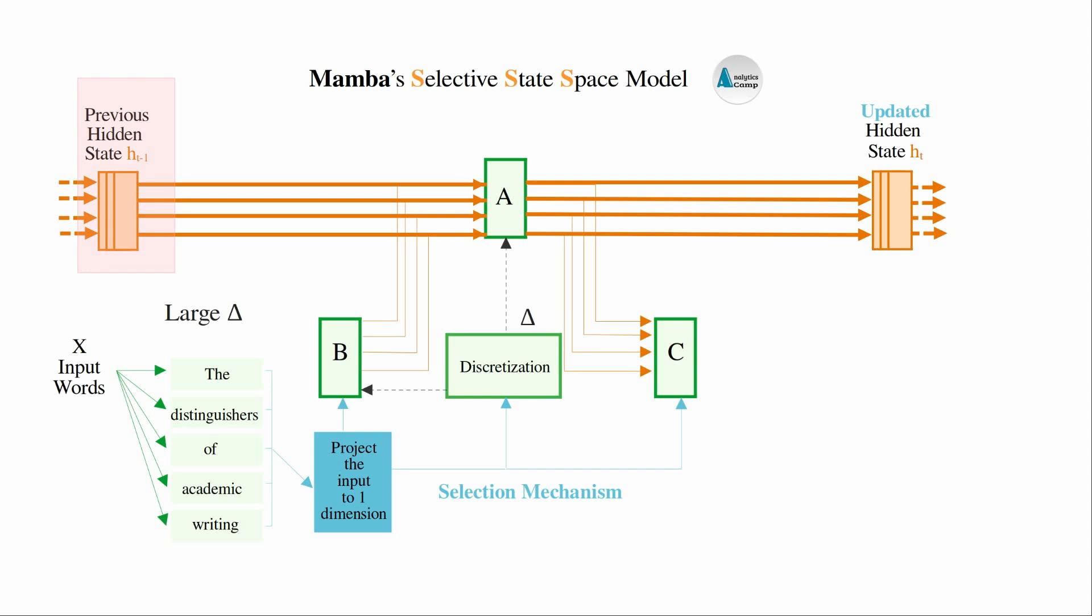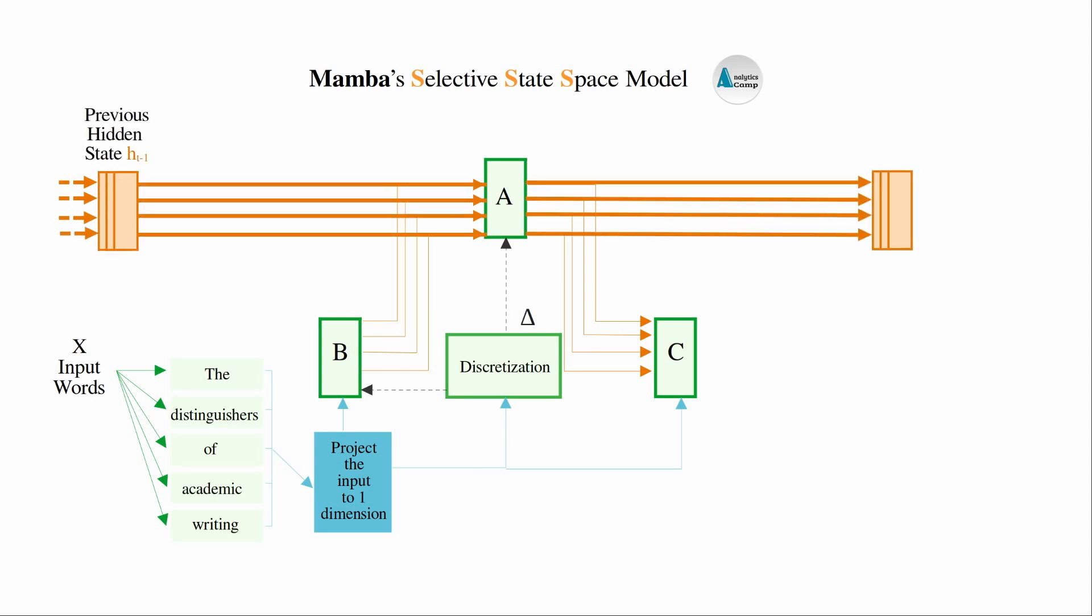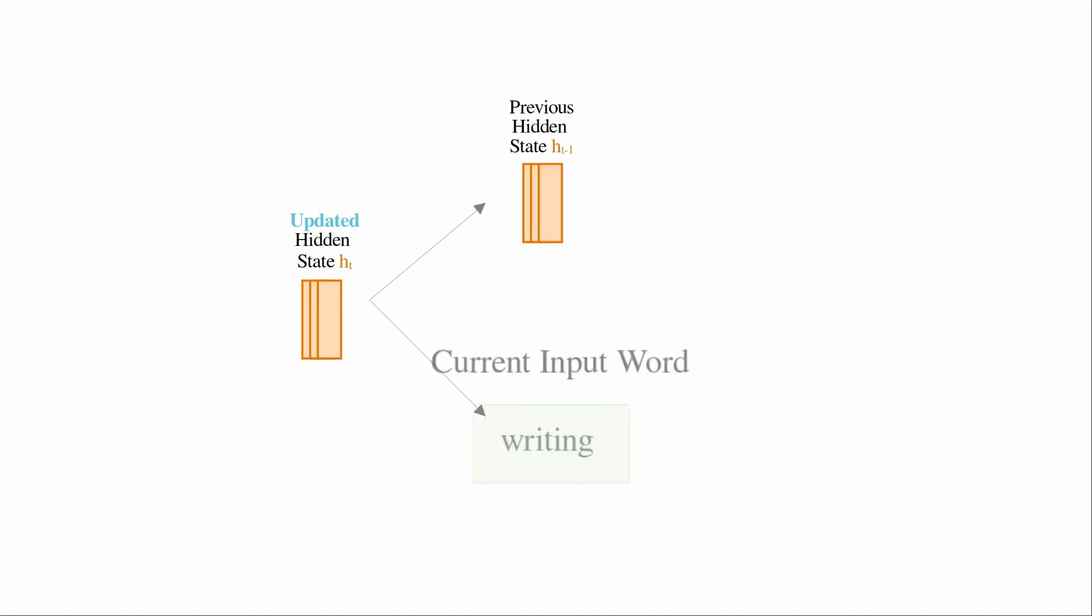With the relevant input words selected, the A matrix can now decide how the hidden state gets updated over time, for example the next predicted word in that word sequence. Remember that the hidden state contains information about the previous input which could potentially be the predicted next word. Each state update is based on the information from the previous hidden state and the new input word.